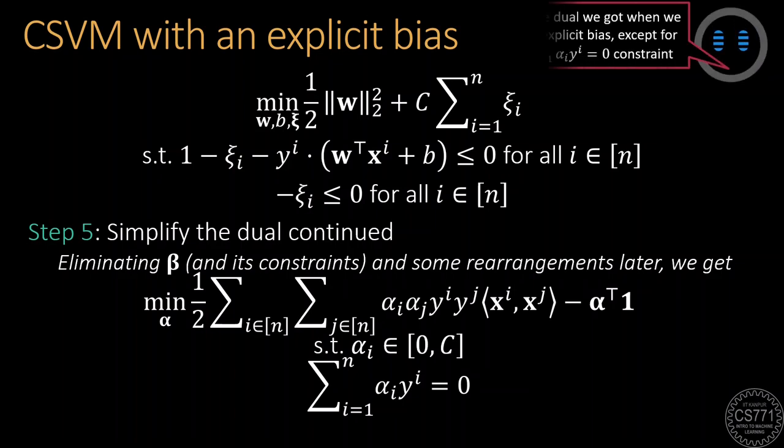We note that this dual is identical to the one we obtained earlier when we had a hidden bias, except that now we have a new constraint that summation over all i, alpha_i times y_i equals zero. Thus, having an explicit bias causes the dual to have an additional constraint that links all the coordinates of the dual variable alpha.